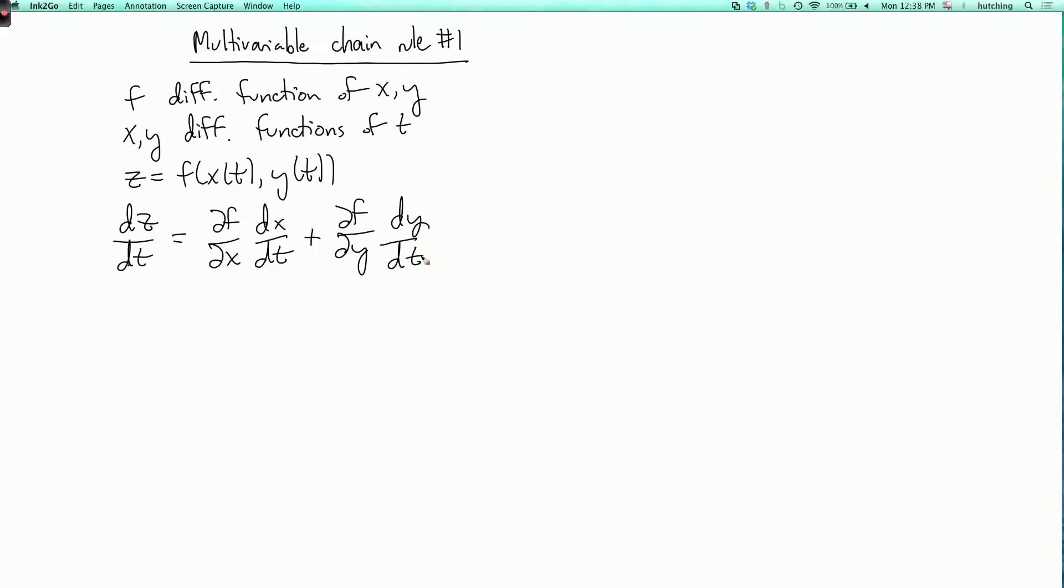So why is this true? How can we prove it? What's the proof? By definition, dz dt is the limit as something goes to zero. Let's call it delta t. So it's the limit as delta t goes to zero of delta z over delta t.